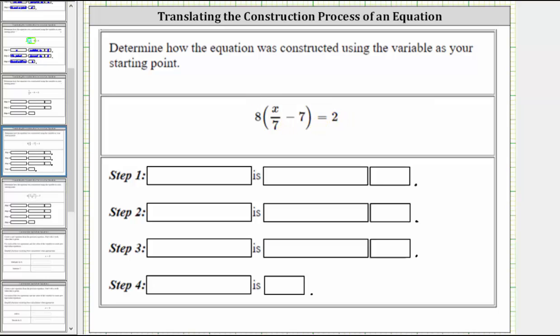Using the variable as the starting point, notice inside the parentheses we have x divided by 7, which means the first step of the construction process is x is divided by 7.